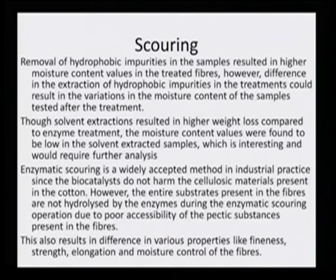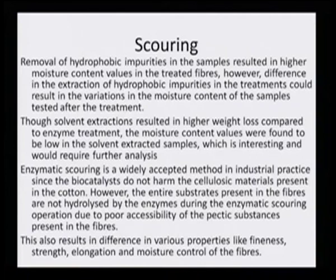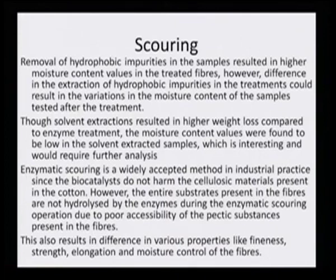Enzymatic scouring is also eco-friendly and biodegradable, and every process needs to be evaluated from the point of eco-friendliness. Enzymatic scouring is a widely accepted method in industrial practice since the biocatalysts do not harm the cellulosic material in cotton. However, the entire substrate present in the fibers is not hydrolyzed by enzymes during enzymatic scouring due to poor accessibility of the pectic substances in the fibers, resulting in variation in fineness, strength, elongation, and moisture content. Even so, the process is largely acceptable as it removes a lot of impurities.